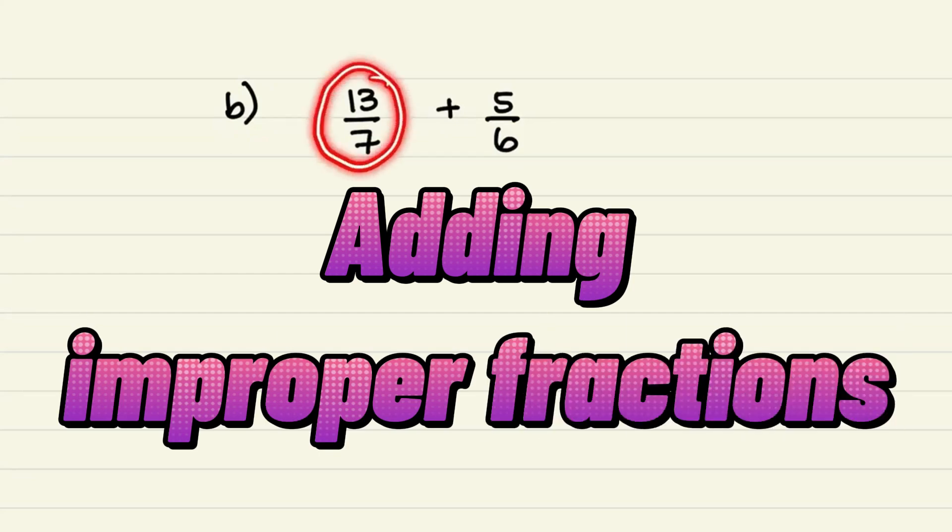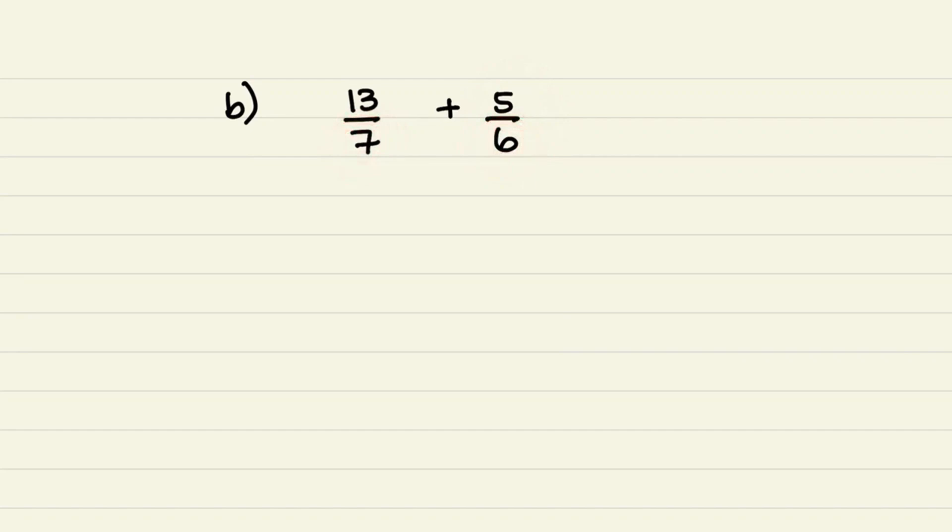We have 13 over 7 plus 5 over 6. So we want to compare these two fractions with each other by creating the same denominator.